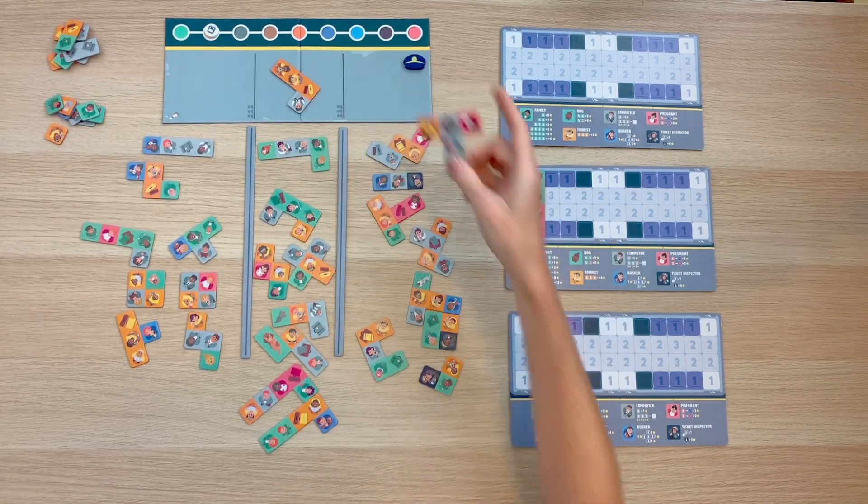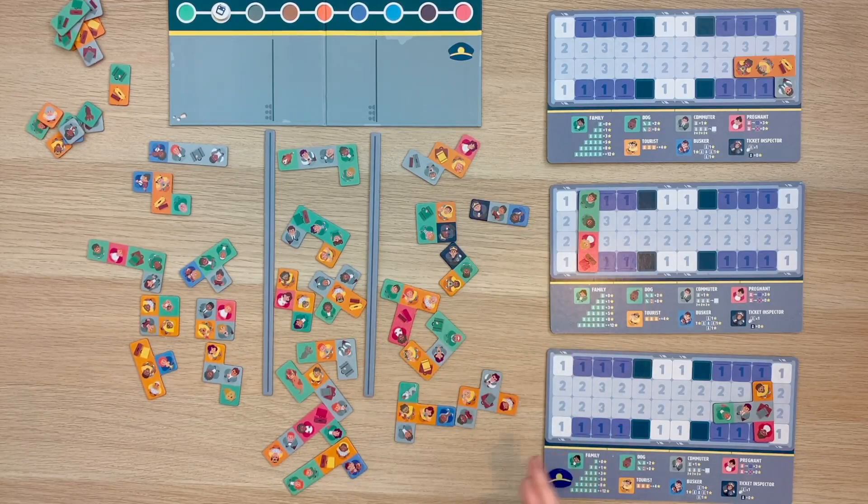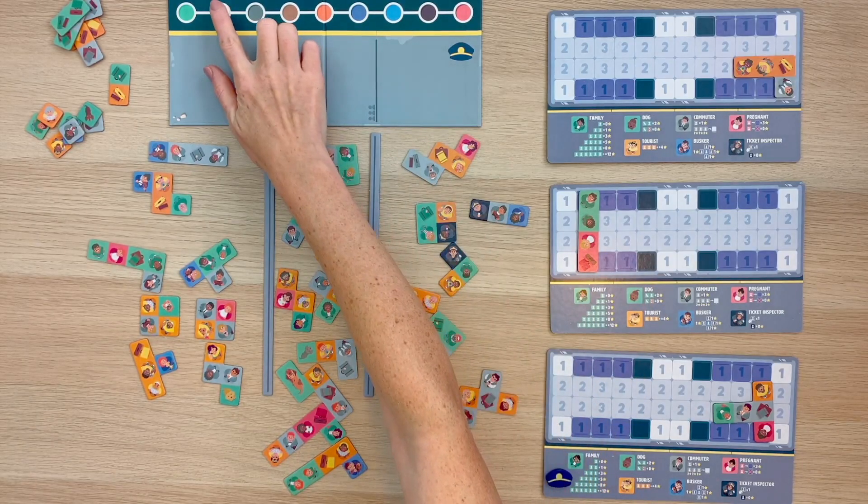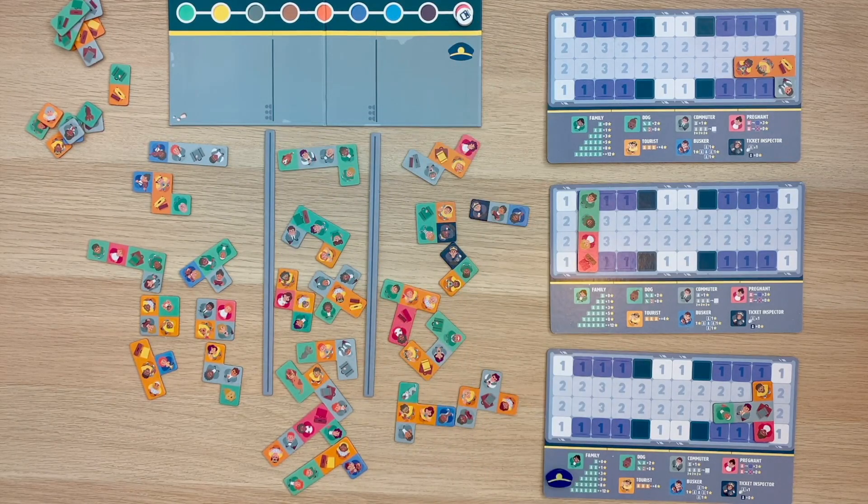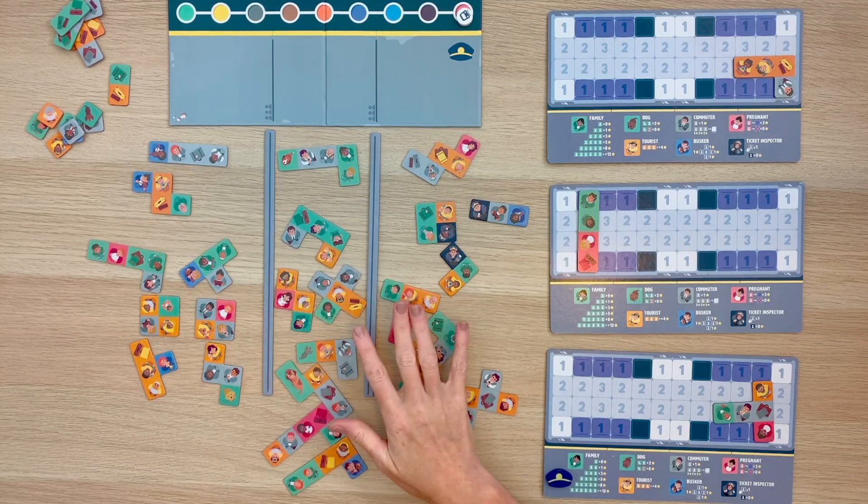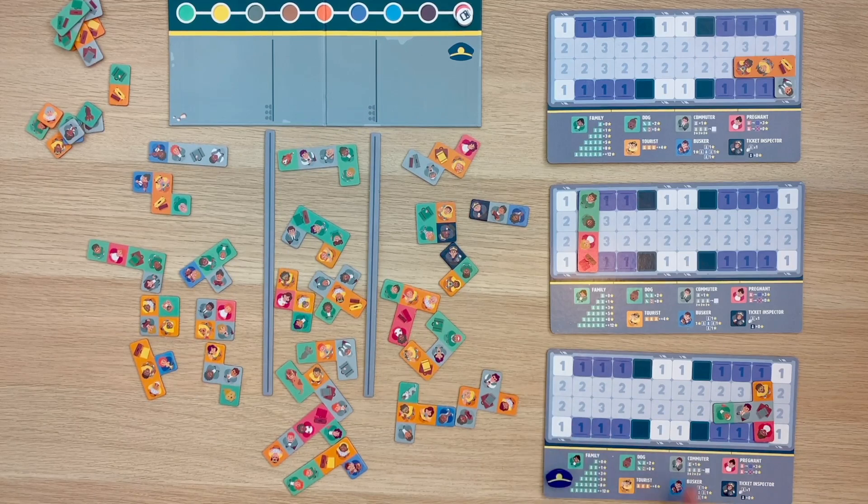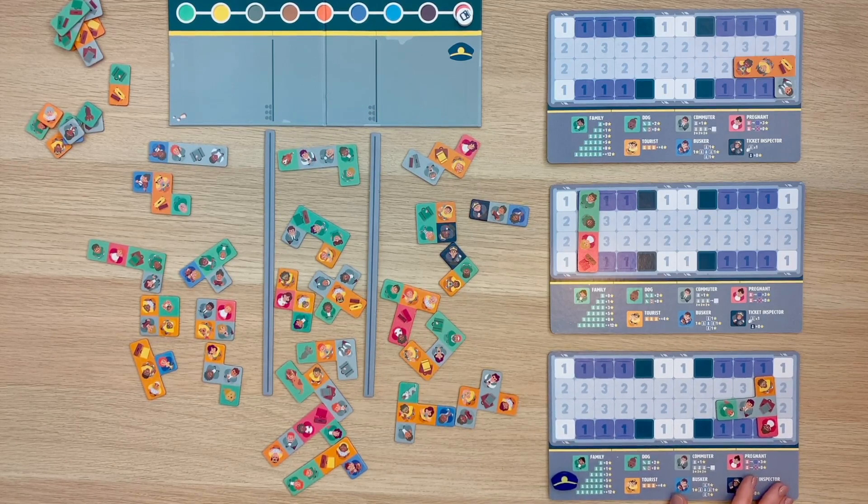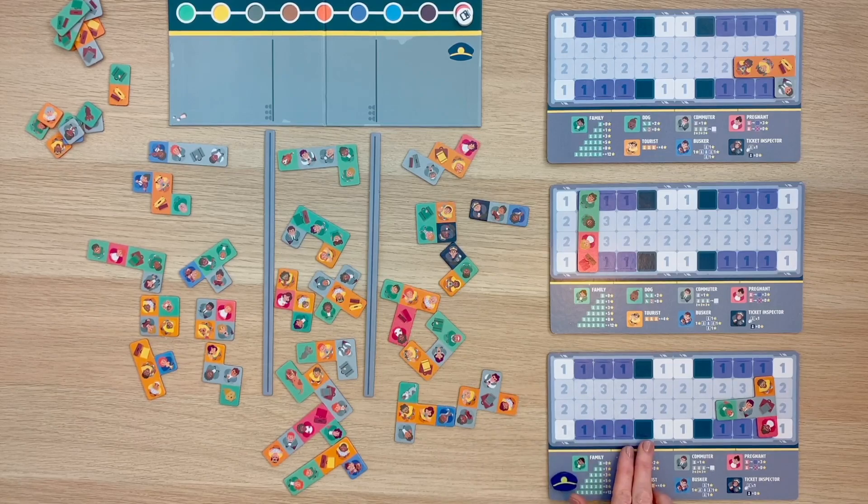Lastly, it's time to place your piece into your carriage. The rounds will continue just like this until the train has finally reached the last stop. At that point, we'll finish the current round, discard any leftover pieces in the queue, and count up our final scores. Now, before we go any further, let's take a closer look at how this subway carriage is laid out, and some placement rules we need to follow when putting passengers into our subway carriage.